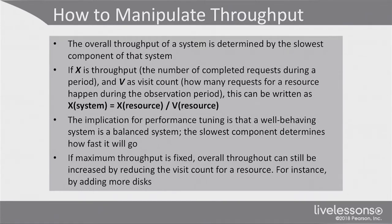If maximum throughput is fixed, overall throughput can still be increased by reducing the visit count for a resource, for instance by adding more disk. That allows you, given some physical boundaries, to manipulate throughput performance anyway. We will get back to that in much more detail later in this course.